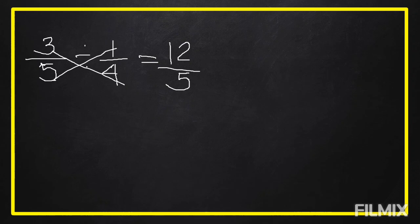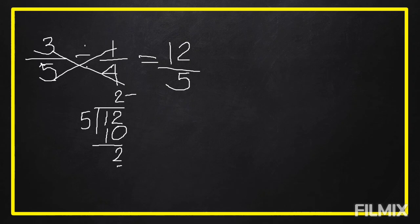Twelve over five is an improper fraction. To reduce it to lowest terms, divide the numerator by the denominator. Twelve divided by five equals two. Two times five equals ten. Twelve minus ten equals two. The remainder two becomes our numerator and five is our denominator. So twelve over five equals two and two-fifths. This is our final answer.